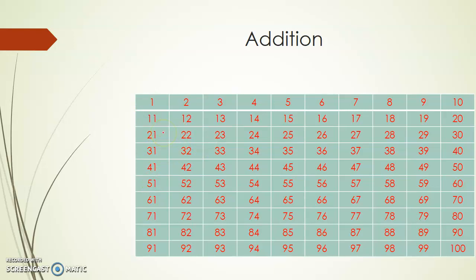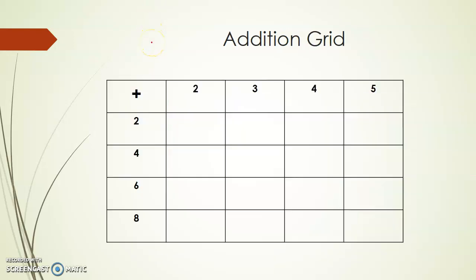So addition by 1 along the row and addition by 10 along the column — you can find it easily using the 1 to 100 number chart. Now, arranging numbers as rows and columns forms a grid. Here I am going to write an addition grid. Here you can see a grid.